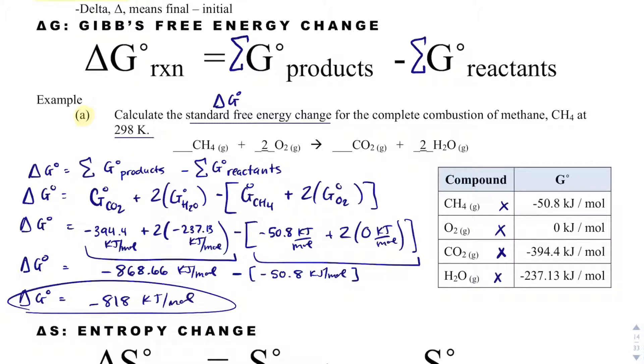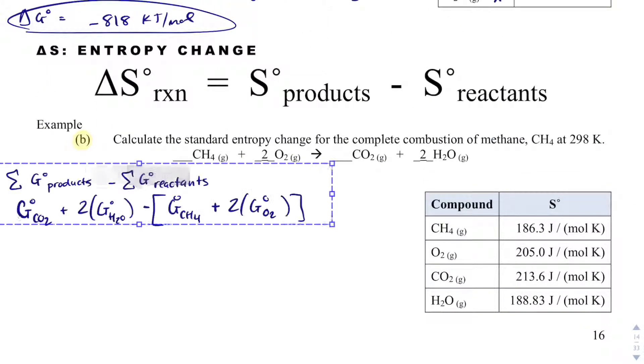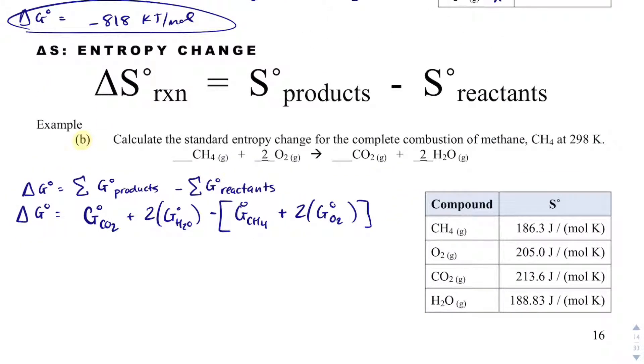Now, when I do delta S, I'm actually going to just copy and paste this to save myself some time because it's going to be the same process. Now, the units are going to be a little bit different. So what I need to do is just get rid of G. But it's the same formula.